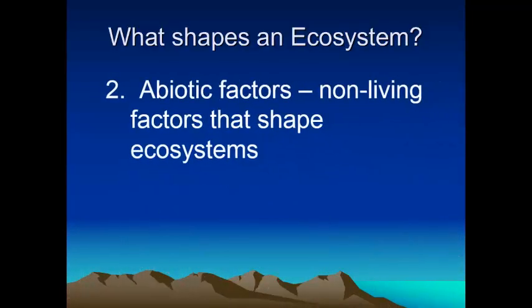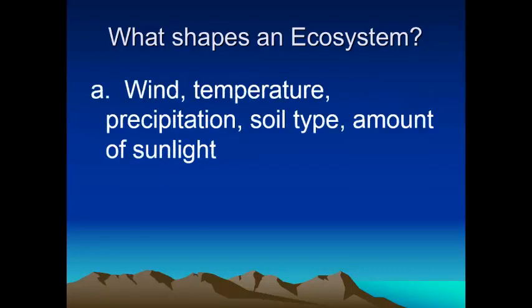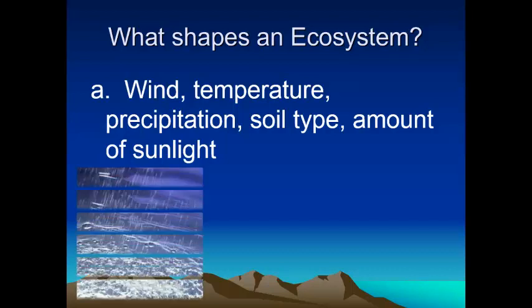Now abiotic — the prefix 'a' in front of a word means the opposite. So abiotic refers to non-living factors, and there are several of them we probably don't even think about anymore. Some abiotic factors that affect us would be wind, the temperature we live in, precipitation and how much water we get, the soil type, and the amount of sunlight we get. All of those influence us.